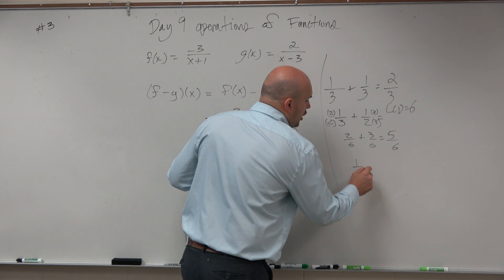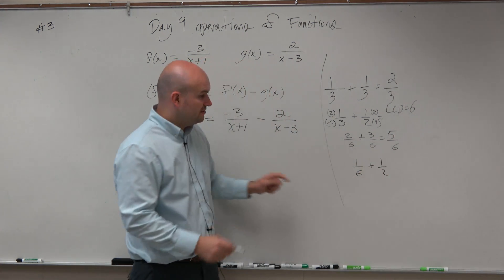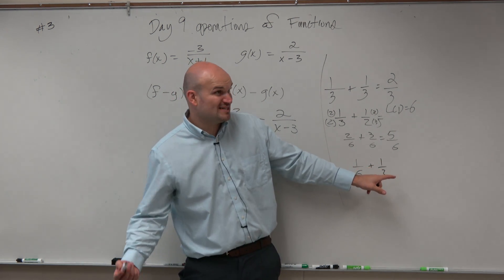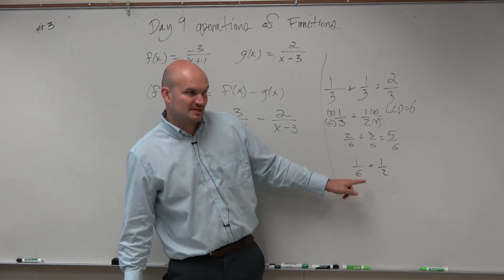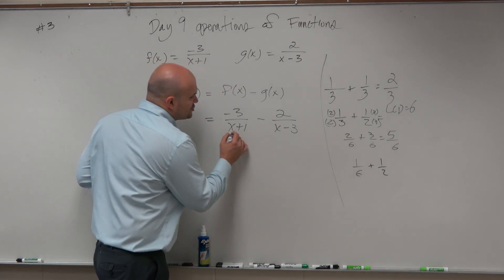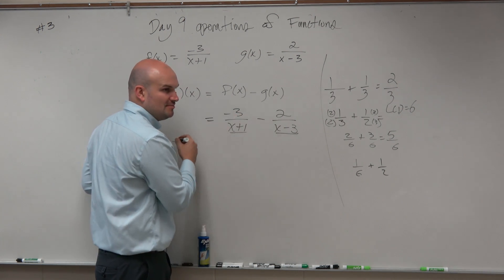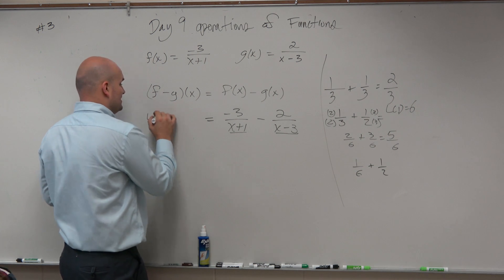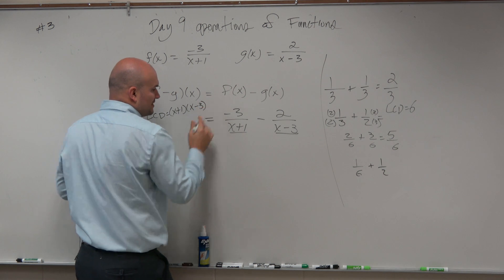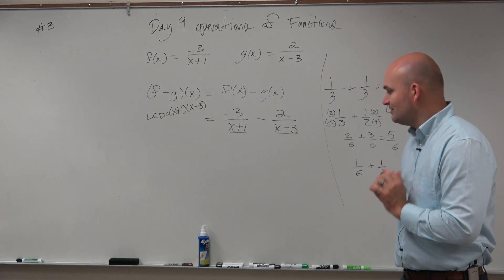We know that it's not always the product that is their common denominator. 6 times 2 is 12, but 12 is not the common denominator. In reality, the lowest common denominator would be 6, because 6 divides into 6, and 2 divides into 6. However, for these tricky problems, the easiest thing to do to find the least common denominator is just to multiply them. So I'm going to write that down to the side, so I don't forget it. The least common denominator is x plus 1, x minus 3. And just leave it in factored form. Don't need to multiply it out.